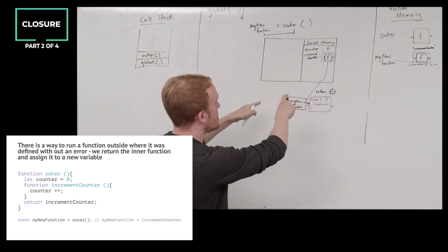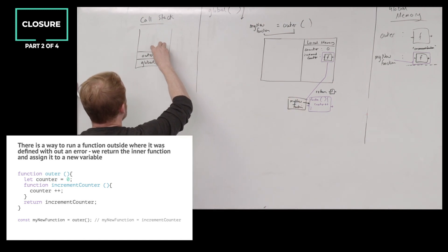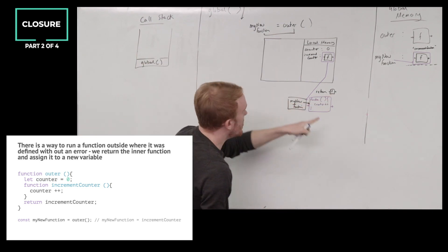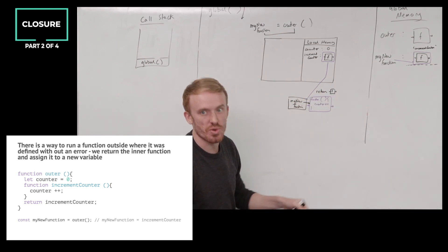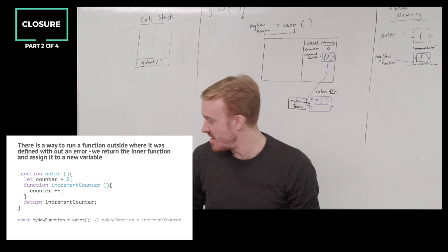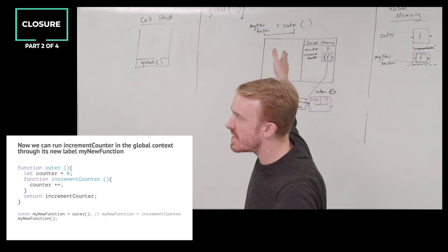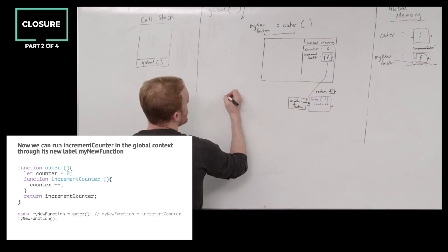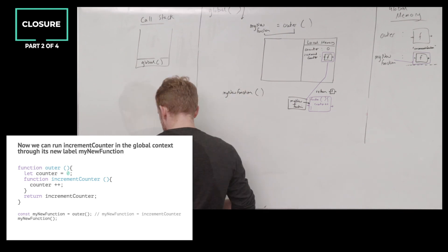What's happened to outer's execution context at this point? It's popped off the call stack. And only the returned-out function, formerly known as increment counter, is held onto in a new global variable: my new function. What's our next line of code? Now we can run our increment counter function in the global context from its new label, my new function. We hit the all-important line — my new function being called.